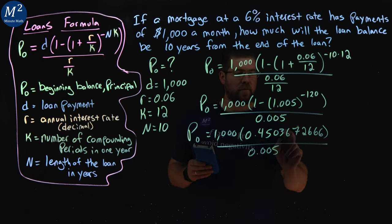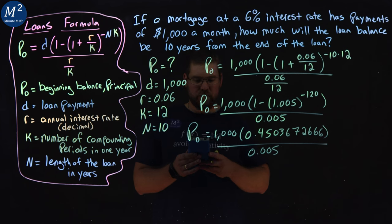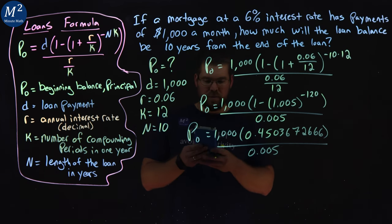I'm going to take this number, multiply it by a thousand, then divided by the denominator, 0.005.